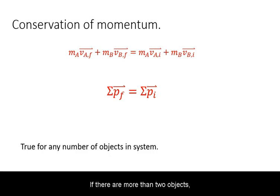If there are more than two objects, you can mathematically prove that as long as all interactions are among them and all outside forces are negligible, this law still holds.